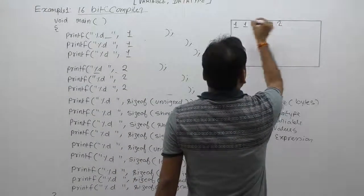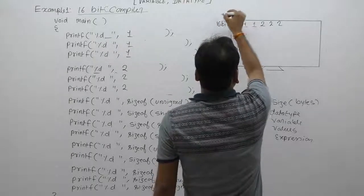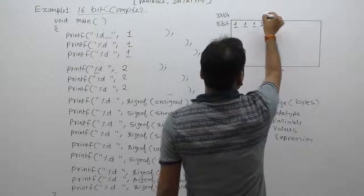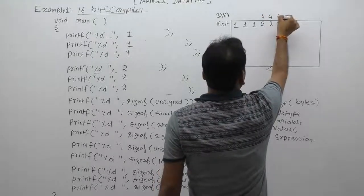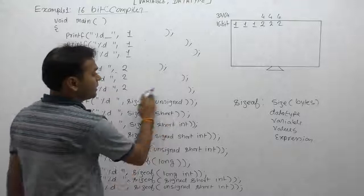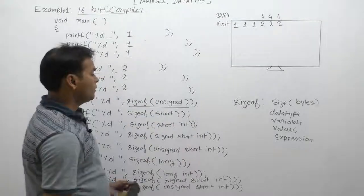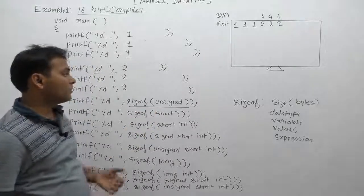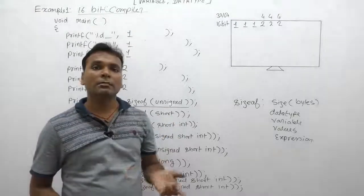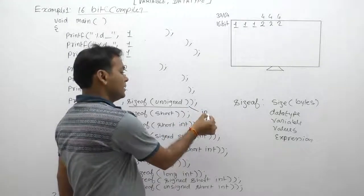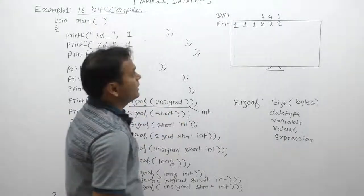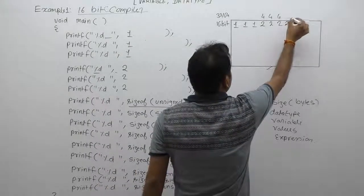In the case of 32 or 64-bit compilers, the integer size display always provides 4. Next, for sizeof(unsigned) — here we are not supplying a data type, only the qualifier. If any qualifier is used without a data type, then by default it applies to integer type. Therefore, its default type is integer. This means it is equivalent to unsigned int, and integer takes two bytes in a 16-bit compiler and four bytes in a 32 or 64-bit compiler.